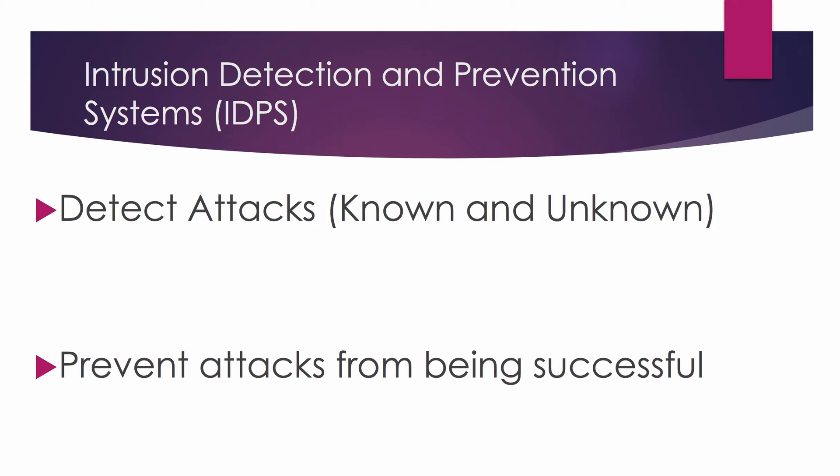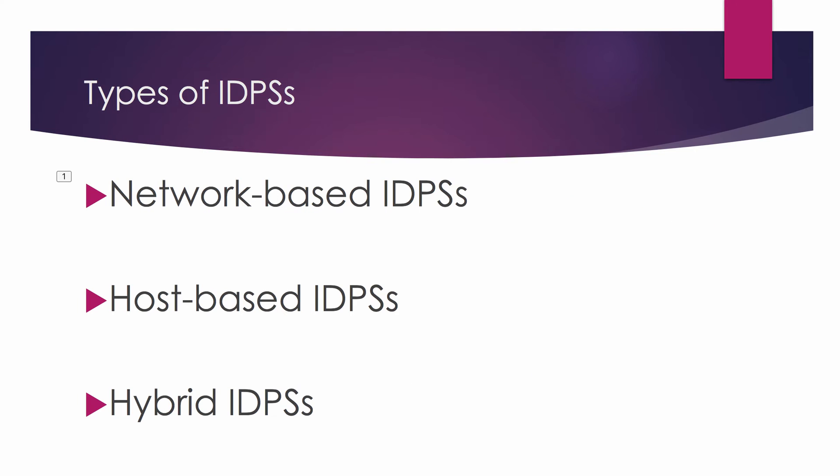One way to categorize IDPS is by its position on the network and how that position affects its activities. The three different options of IDPS are network-based IDPS, host-based IDPS, and hybrid IDPS. In this instructional video we are going to concentrate on network-based IDPS.